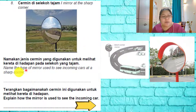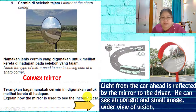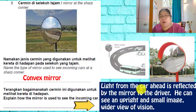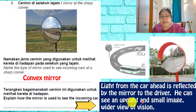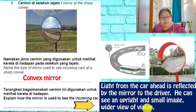Question eight: why do we place a mirror at a sharp corner? The type of mirror used to see incoming cars at a sharp corner is a convex mirror, because we want to see a wider area. Light from the oncoming car is reflected by the mirror to the driver, who can see an upright, small image with a wider field of view — helping to see cars coming from another route even at a blind point.